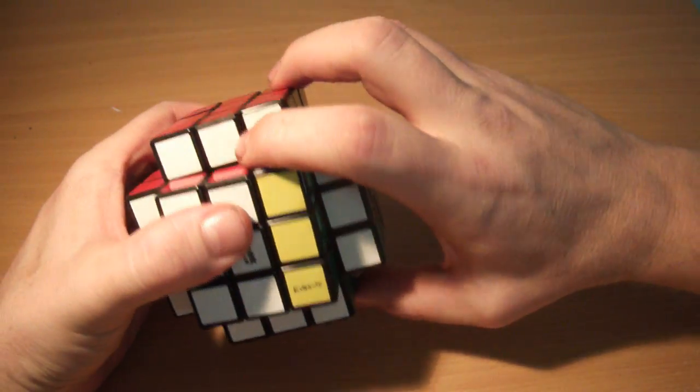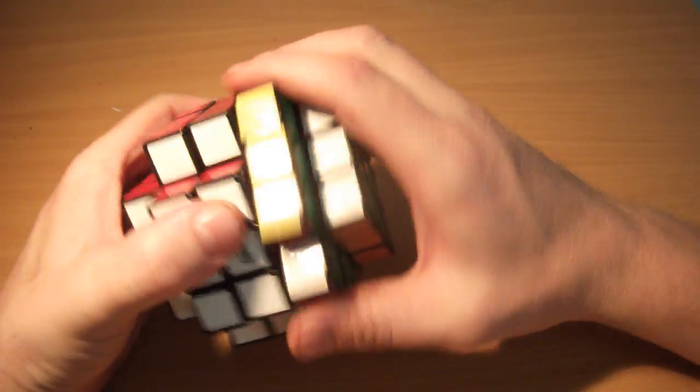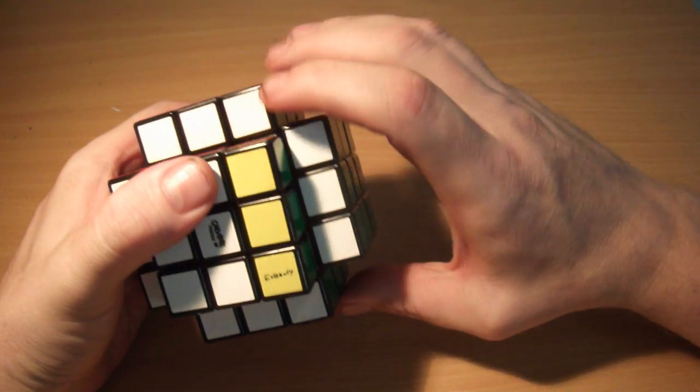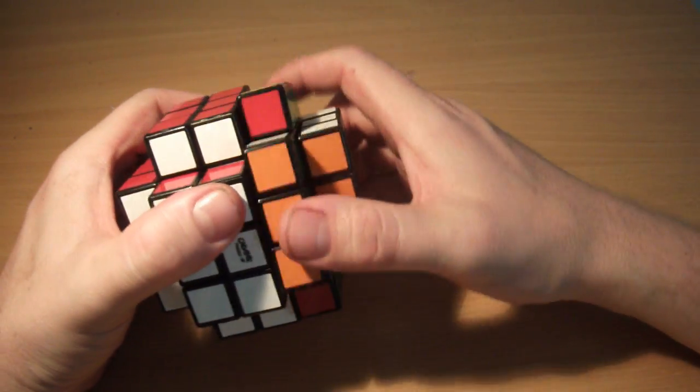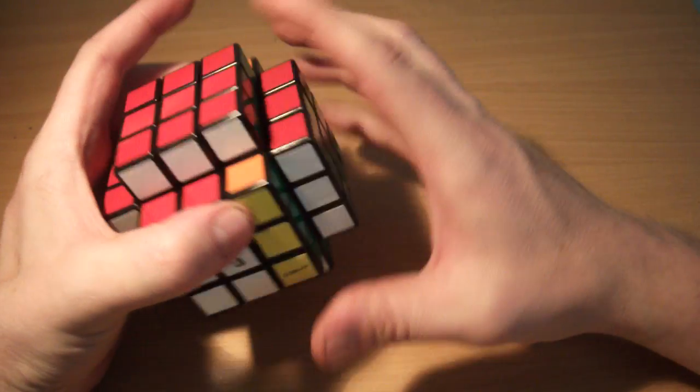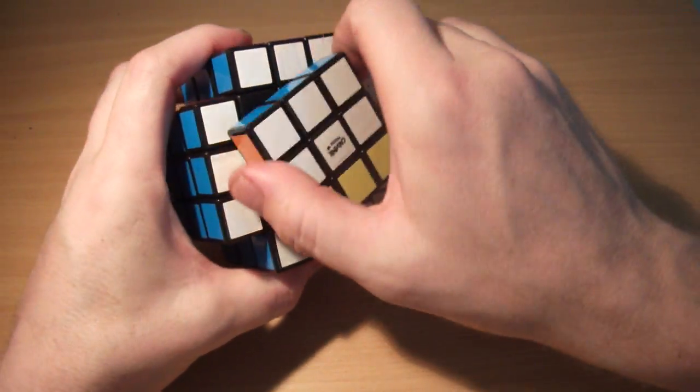But if I say R, I mean this entire section that has the two strips unsolved on it. So when I say R, don't turn this bit, turn this whole X-shaped piece. For U and F, you turn these two.